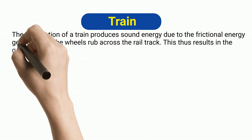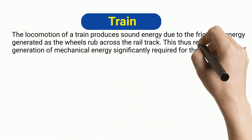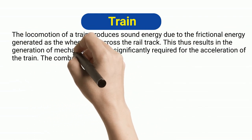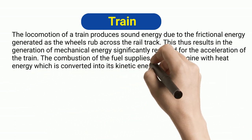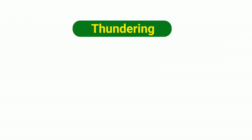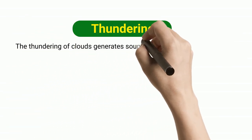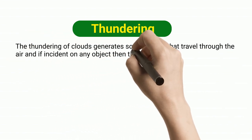Train: The locomotion of a train produces sound energy due to frictional energy generated as the wheels rub across the rail track. This results in the generation of mechanical energy required for the train's acceleration. The combustion of fuel supplies the engine with heat energy, which is converted into kinetic energy.